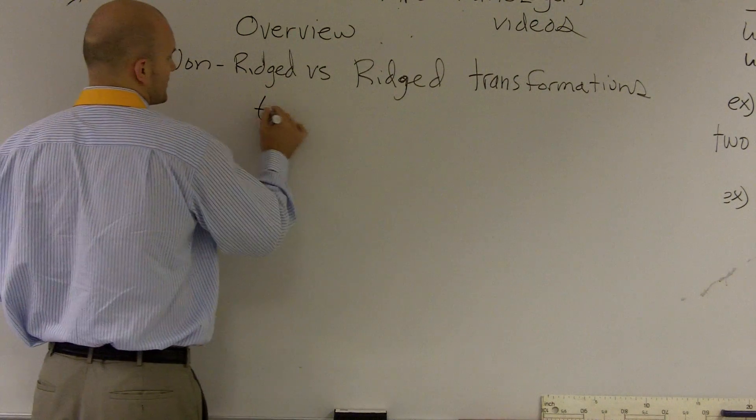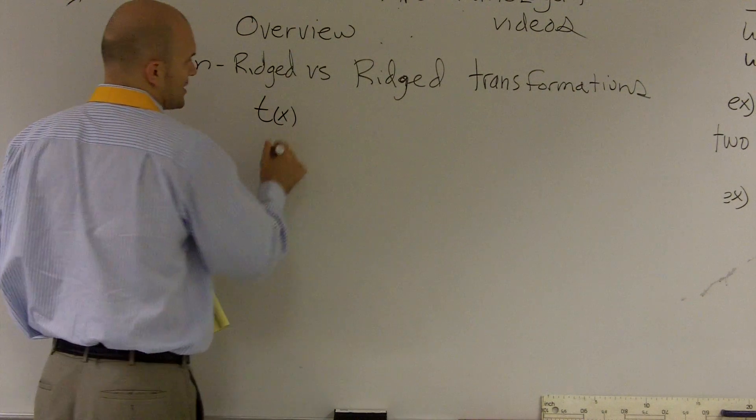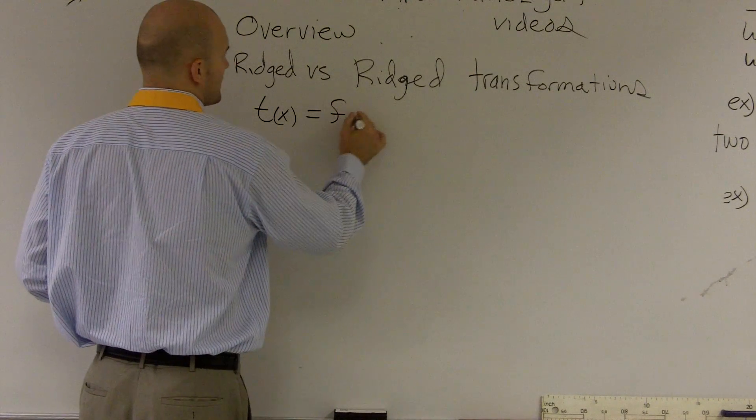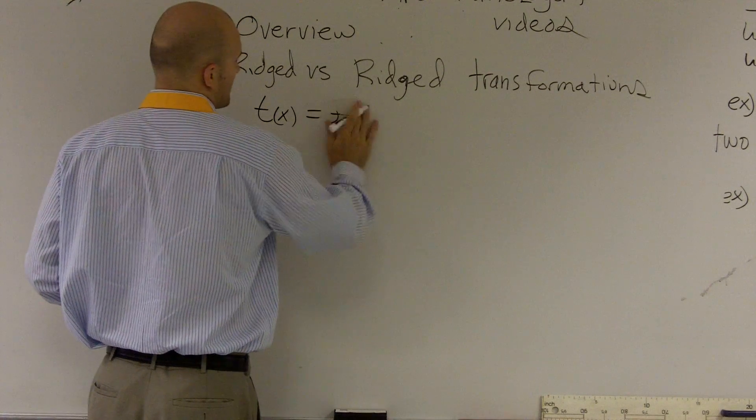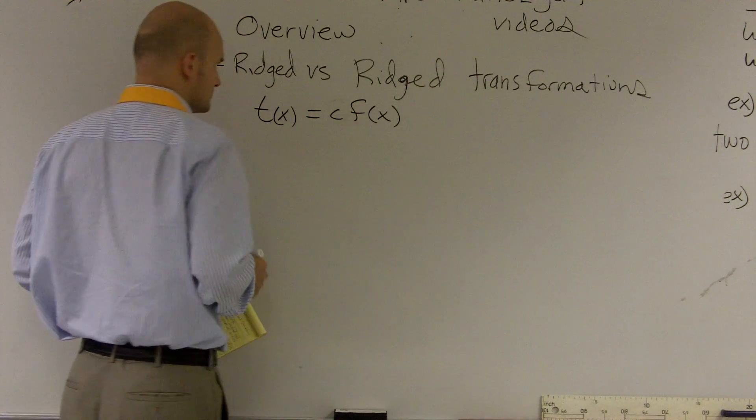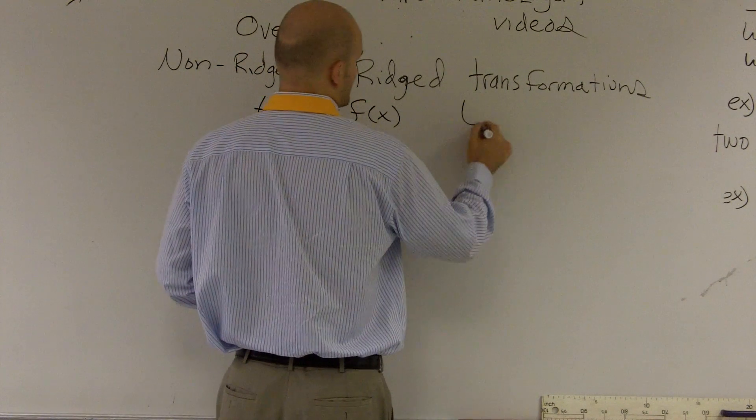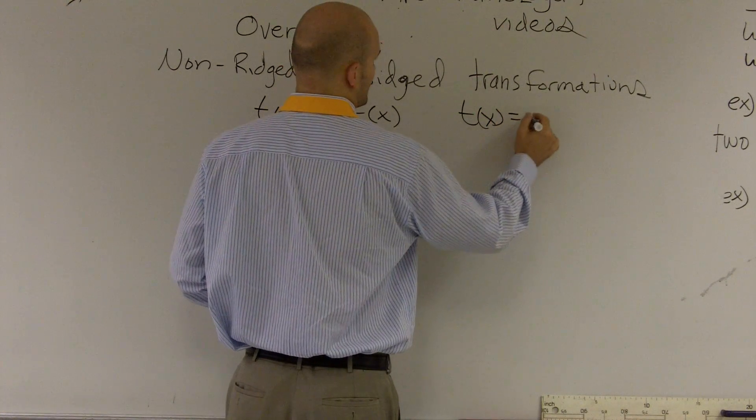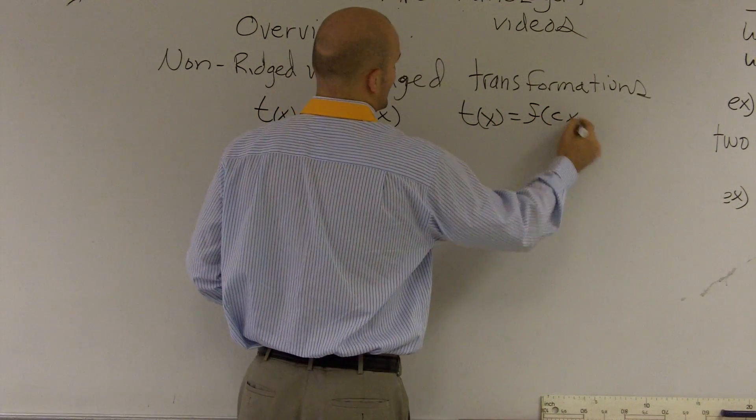So our last type of translation, if you remember, we were looking at t(x) as your translation of x, is going to equal c times f(x). And also we'll deal with translation of x equals f(cx).